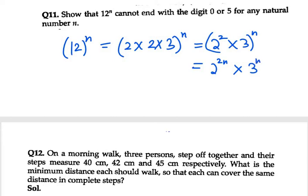Now you can see it has no 5 in its prime factorization. Therefore 12^n can never end with digit 0 or 5.